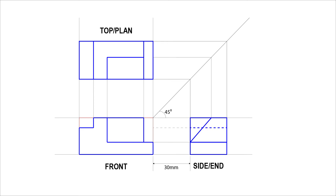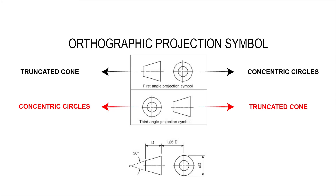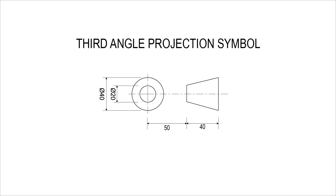The drawing is yet to be completed. The symbol of the third angle is different from the first angle symbol. In the first angle projection, the truncated cone is on the left and the concentric circles are on the right. In third angle, it is the opposite — the concentric circles are on the left and the truncated cone is on the right. There is a reason for why those symbols are as such, and maybe I will make a tutorial on this later. But for now, let's draw the symbol for the third angle projection. Take this dimension for the symbol.